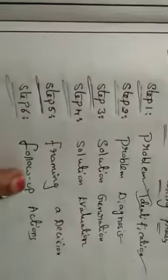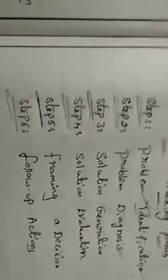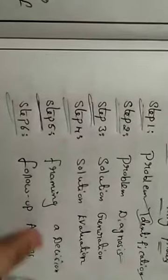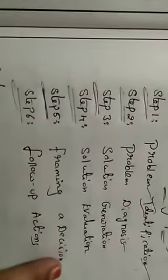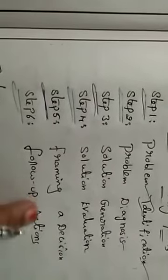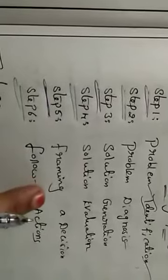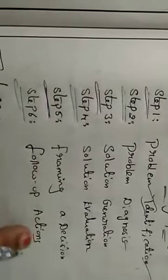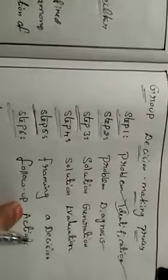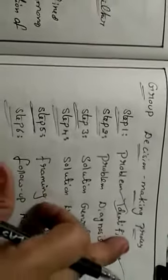The next step is framing a decision. And the last step is follow-up actions — after completing the forming of a decision, the group has to follow the actions, take corrective measurements, and implement them. These are the steps in the group decision making process.